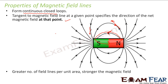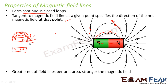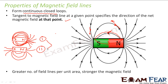Third property: a greater number of field lines per unit area means a stronger magnetic field. If we compare two magnets — one where field lines are very crowded and another where they are spread out — the one with more crowded field lines has a greater number per unit area, indicating a stronger magnet. So greater density of magnetic field lines corresponds to greater magnetic field strength.